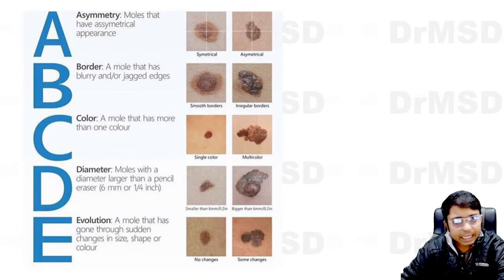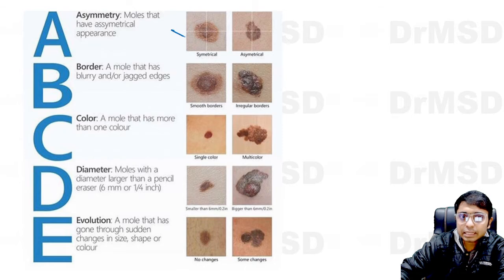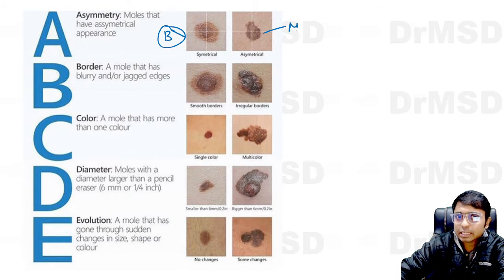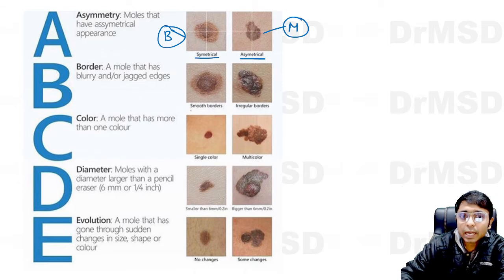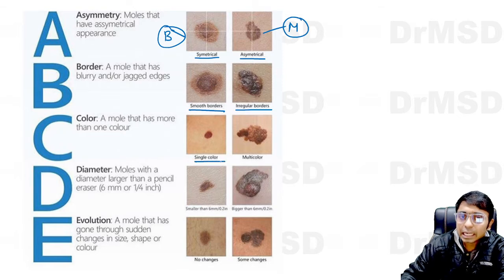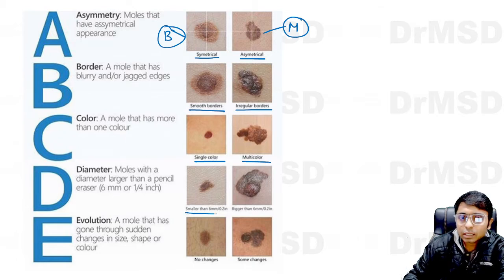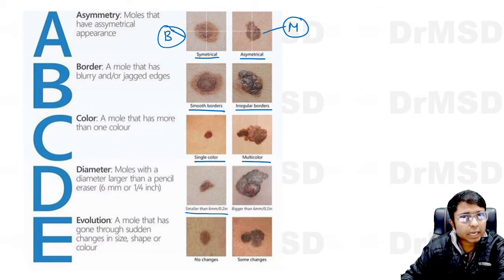What does ABCDE stand for? On the left hand side are benign lesions — benign moles — and on the right are malignant melanoma lesions. In benign lesions, symmetry is present, whereas in malignant lesions, symmetry is absent. Smooth borders are present in benign moles, whereas irregular borders are seen in malignant melanoma. Homogeneous single color is present in benign lesions, whereas heterogeneous or multicolor is seen in malignant lesions. Diameter is less than 6 mm in benign lesions and more than 6 mm in malignant lesions.